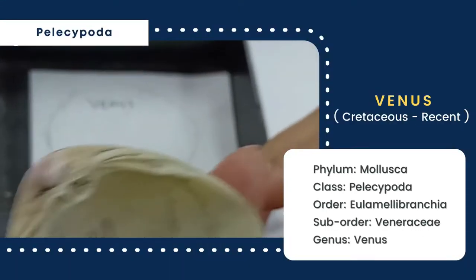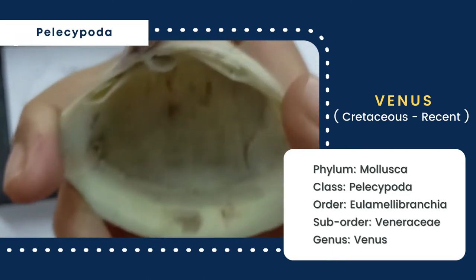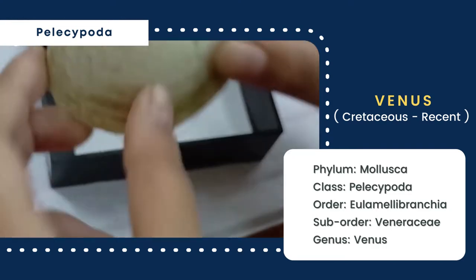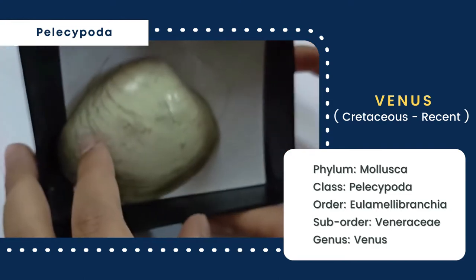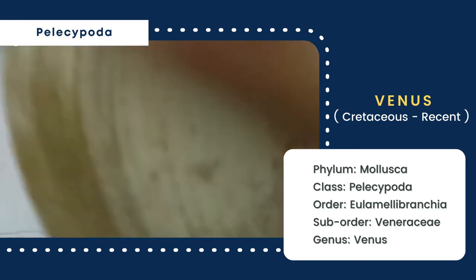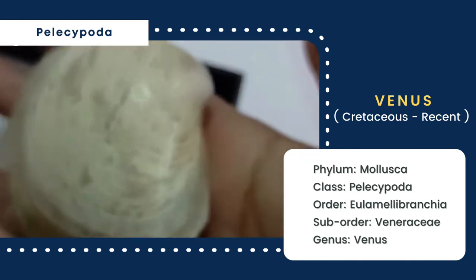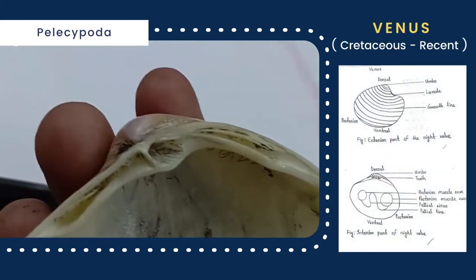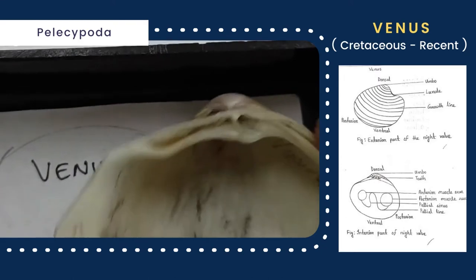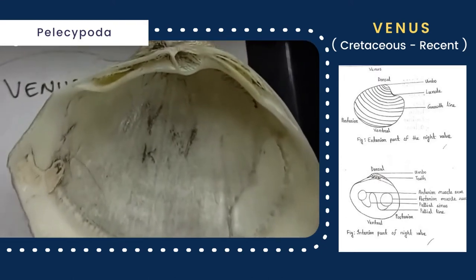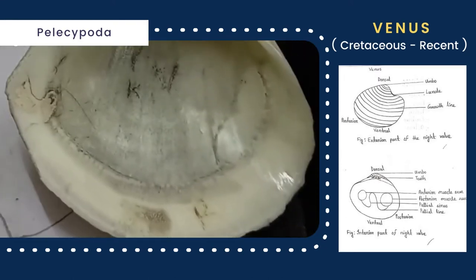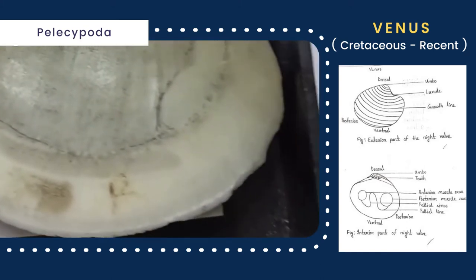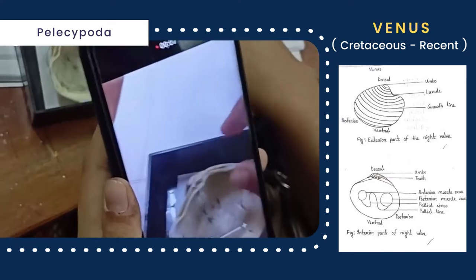First of all, you can see the given sample is the right valve of a Venus shell, which is convex, oval-shaped, and inequilateral. The length is greater than the height. The exterior of the valve is sculptured with growth lines, and the umbo is present. The valve shows heterodont type of dentition. The ligament is present and placed anteriorly. Two adductor muscle scars of dimyarian type with an entire palleal line are marked by the presence of palleal sinus.